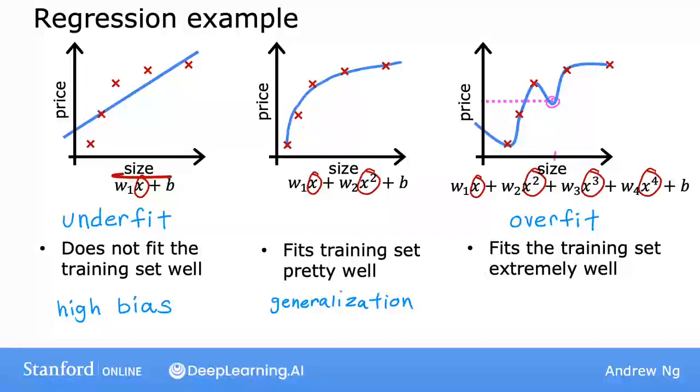Another term for this is that the algorithm has high variance. In machine learning, many people will use the terms overfit and high variance almost interchangeably. And we'll use the terms underfit and high bias, almost interchangeably. The intuition behind overfitting or high variance is that the algorithm is trying very, very hard to fit every single training example. And it turns out that if your training set were just even a little bit different, say one house was priced just a little bit more, a little bit less, then the function that the algorithm fits could end up being totally different. So if two different machine learning engineers were to fit this fourth order polynomial model to just slightly different datasets, they could end up with totally different predictions or highly variable predictions.